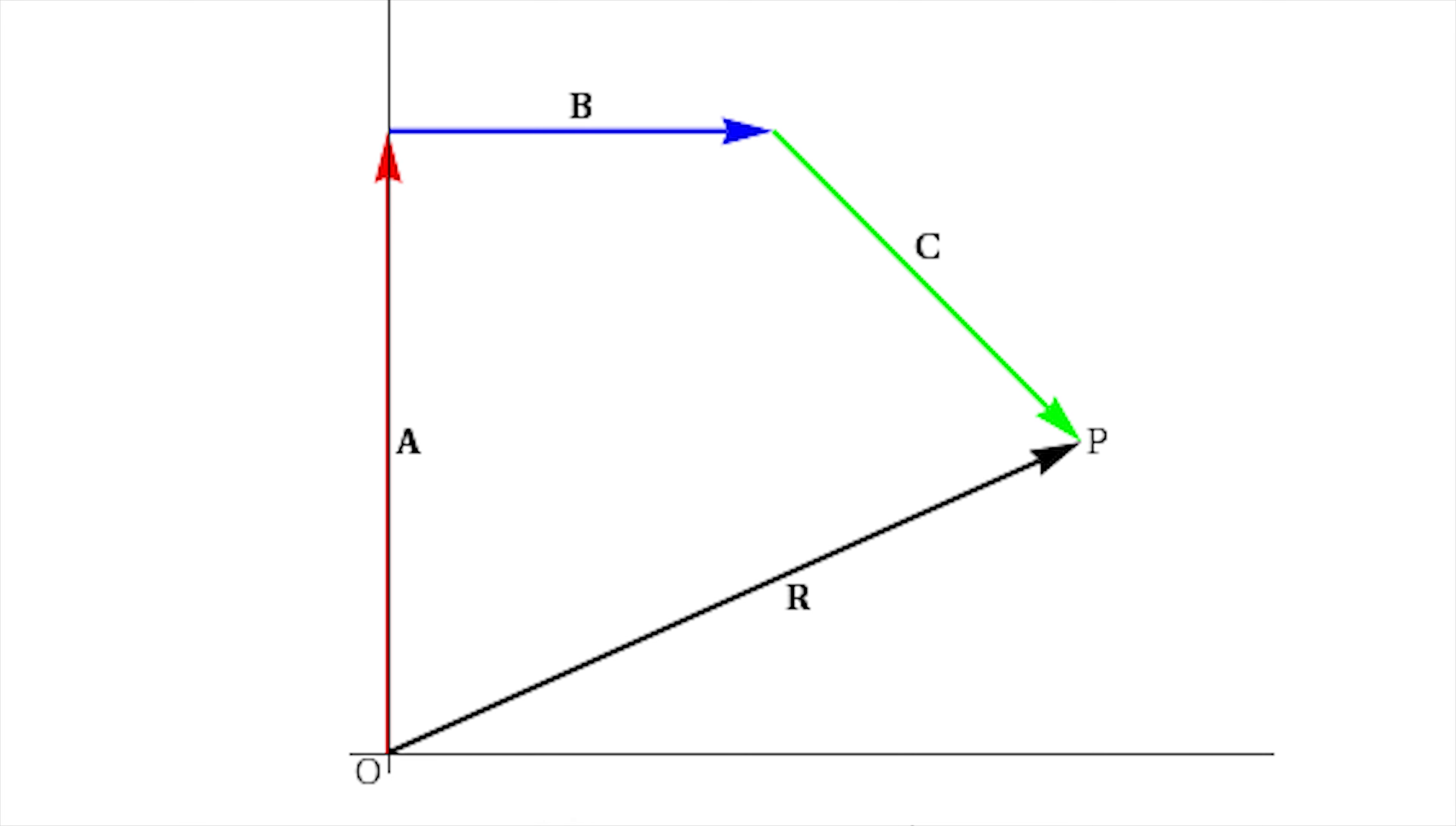If there had been three different ways the event could happen, we would have drawn three different arrows and added them together and squared the final arrow.